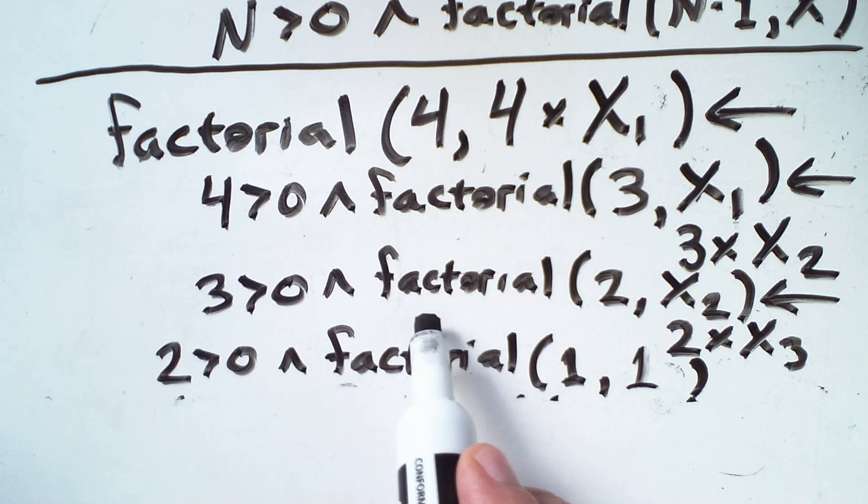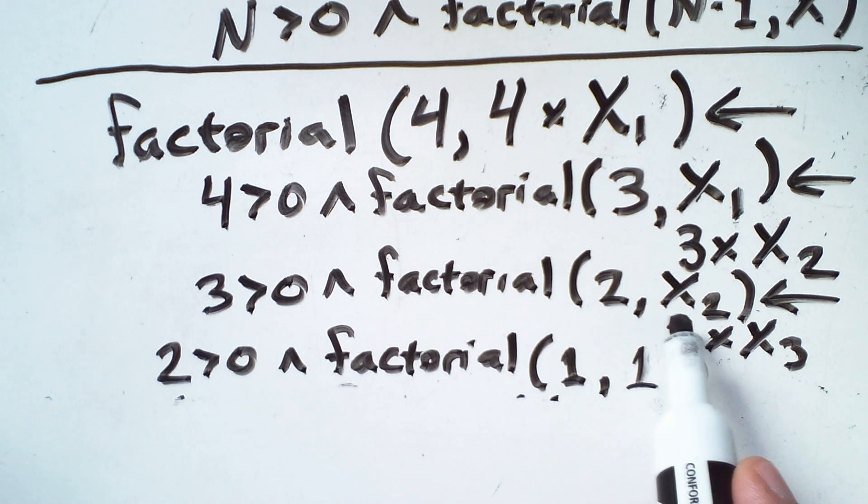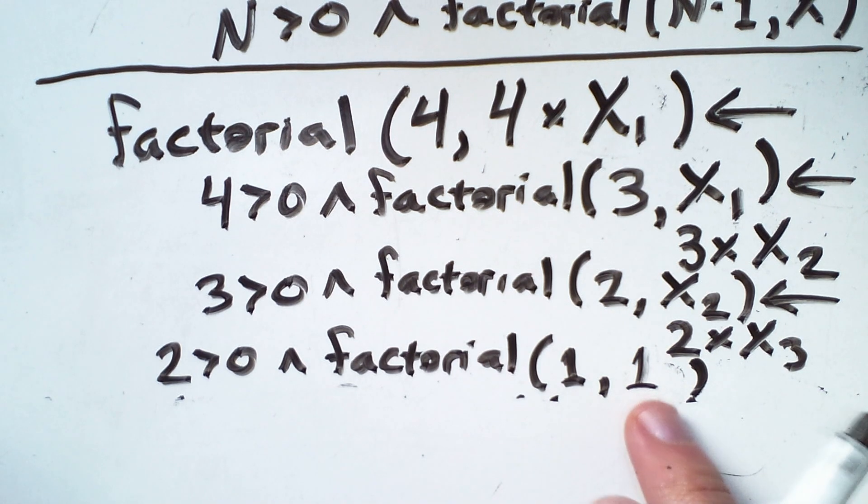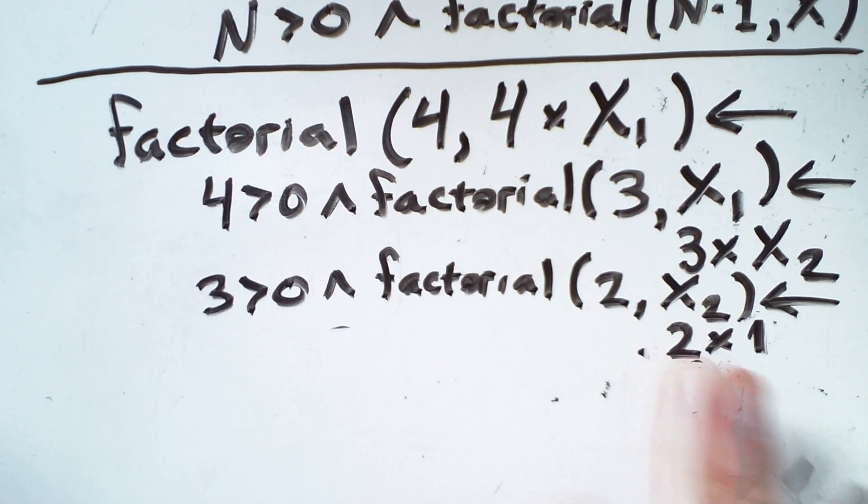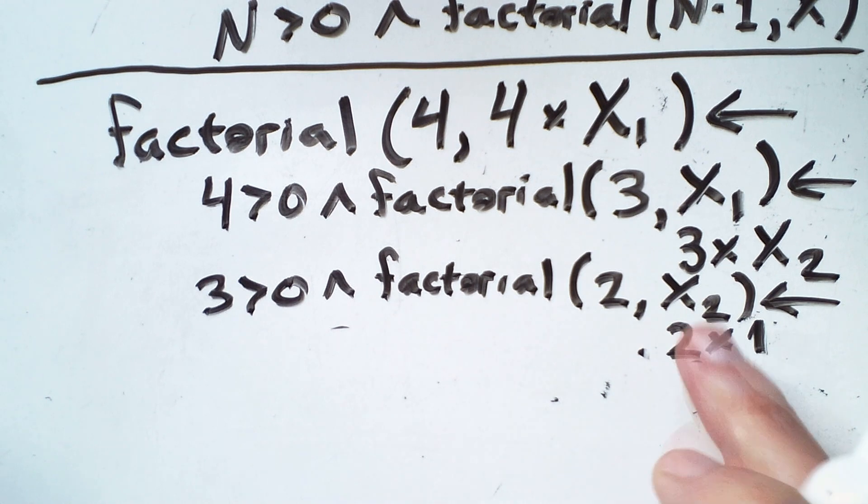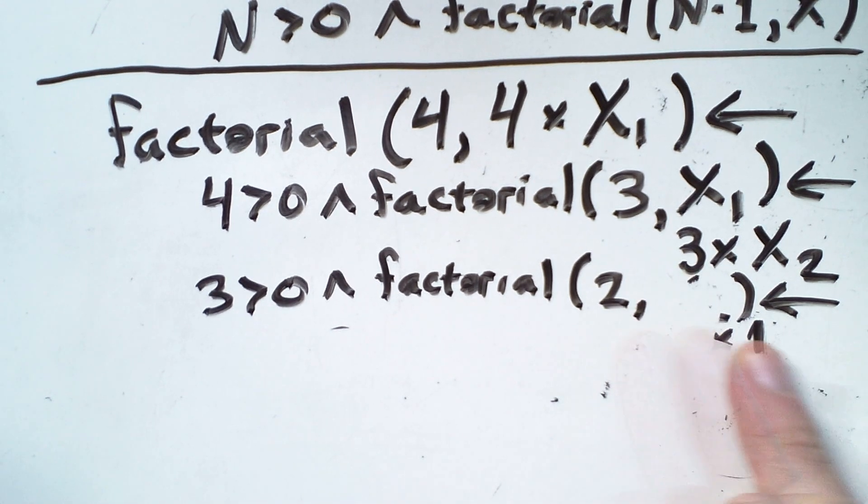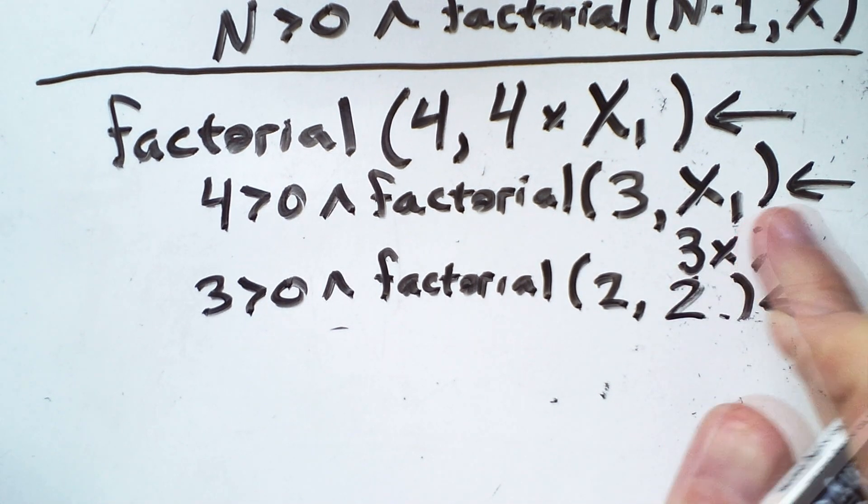That means that factorial 2, x2 is also true, given that x2 is 2 times x3, where the x3 came from here. We can get rid of this. We can actually compute 2 times 1. That's the value of x2. So this is 2, which is also going to go here in a moment.